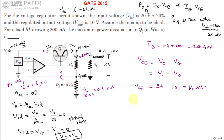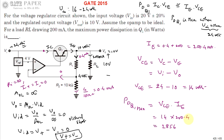Therefore Vce for maximum power dissipation is 24 − 10 = 14 volts. The maximum power dissipation across transistor Q1 is Vce × Ie = 14 × 200.4 mA = 2.856 watts. This is the correct answer for the given question.